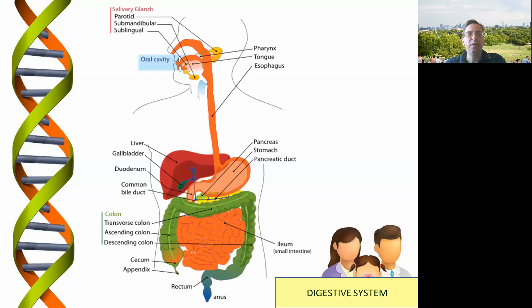Looking at the structure of the digestive system — remember biology is systems, organs, tissues and cells. We start with the salivary glands, three different types: parotid, submandibular and sublingual.